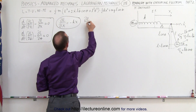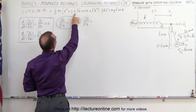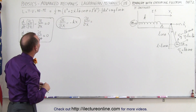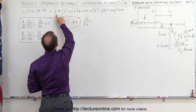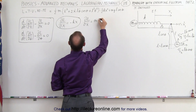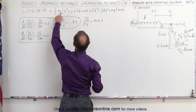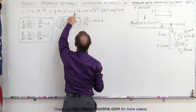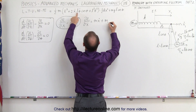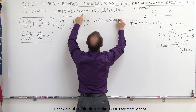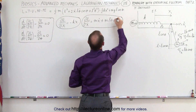Now we take the partial of the Lagrangian with respect to x-dot. There's a term here and a term there; the rest do not have an x-dot term, so we just find the derivative of those two. Taking the first one, we still have the one-half m, two times one-half is one, it ends up with m x-dot, plus one-half times two is one, we still have the m, and x is the only variable, so we end up with m times l theta-dot times the cosine of theta. That gives us the partial of the Lagrangian with respect to x-dot.